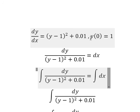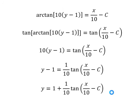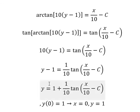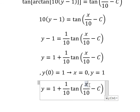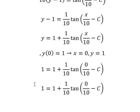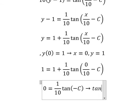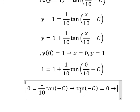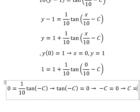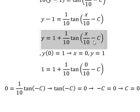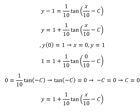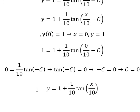Now we have the initial conditions: when s equals 0, y equals 1. So I will put 0 in here and 1 in here. If we simplify, 1 minus 1 gives zero, and this side gives zero. So we have arctan of negative c equals zero, meaning negative c equals zero and c equals zero. Now we put c equals zero into the equation, and this is the final answer.